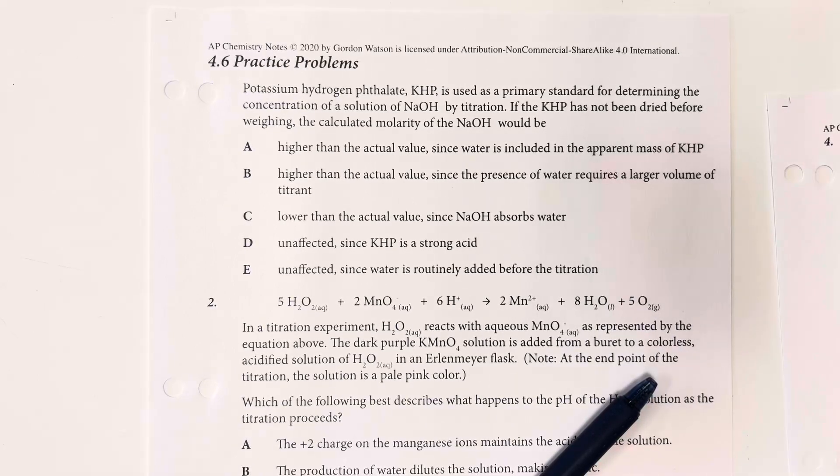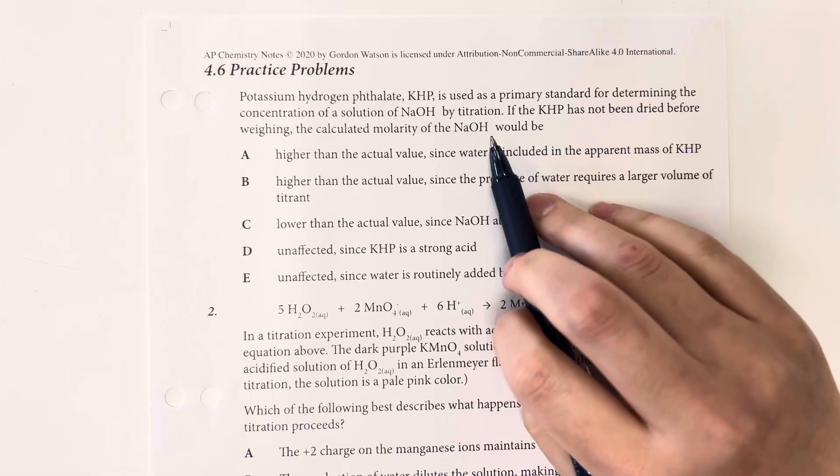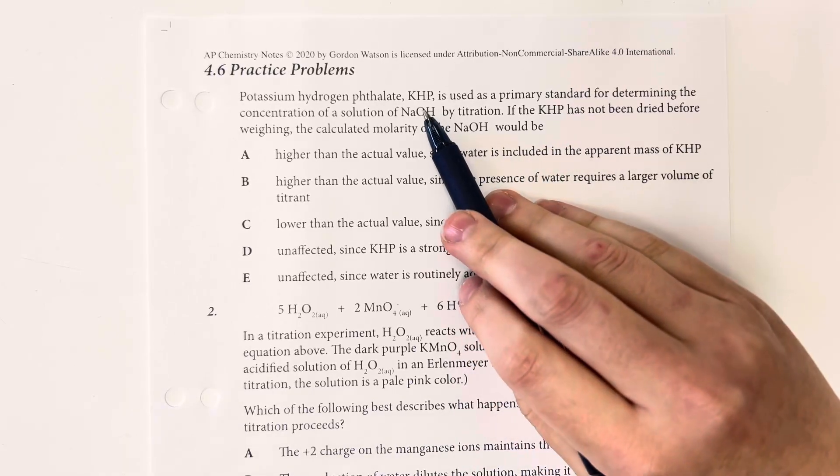4.6 practice problems. Potassium hydrogen phthalate, KHP, is used as a primary standard for determining the concentration of a solution of sodium hydroxide by titration. If KHP has not been dried before weighing, the calculated molarity of the sodium hydroxide would be. So if KHP is not dried,